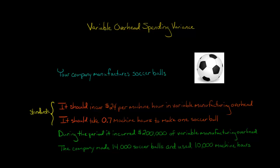In this video, we're going to discuss how to calculate the variable overhead spending variance. Let's say your company manufactures soccer balls and your upper management has set the following standards: the company should incur $24 per machine hour in variable manufacturing overhead costs.